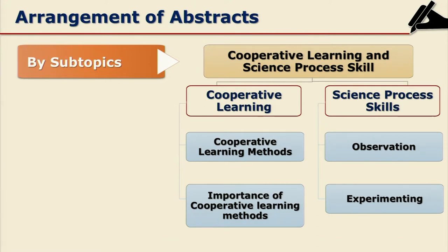Cooperative learning and science process skills will be the main categories for the researcher. For the first category, types of cooperative learning methods and importance and examples of cooperative learning methods can be one sub-category. For science process skills, observation and experiment can be the two sub-categories, and you can arrange accordingly.